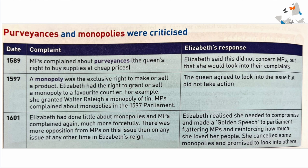Moving on to opposition over money — monopolies. In 1589, MPs complained about the purveyances, the Queen's right to buy supplies at cheap prices. Elizabeth said this did not concern MPs, but that she would look into their complaints. They were complaining that the Queen had the right to buy supplies at cheap prices, and her response was that she would look into the matter.